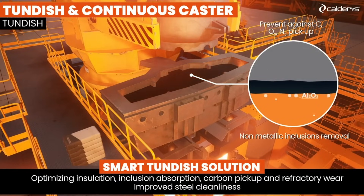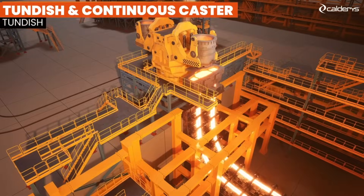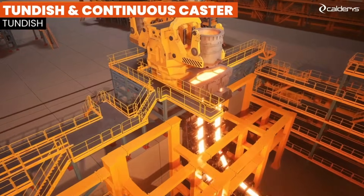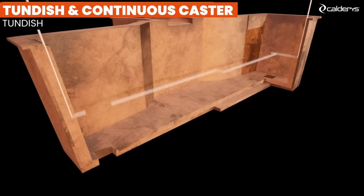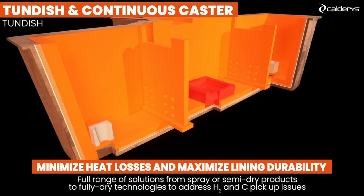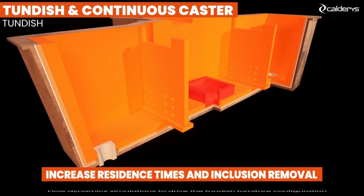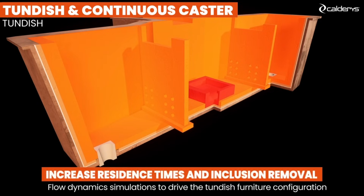This tundish can hold up to 6,000 pounds, elevated about 65 feet, lined with refractory material, and contains submerged nozzles that allow the molten metal to flow into copper molds.